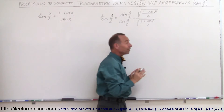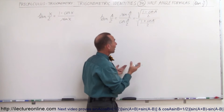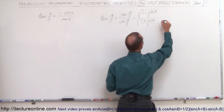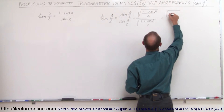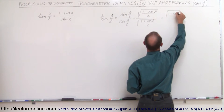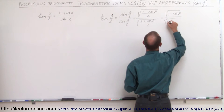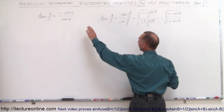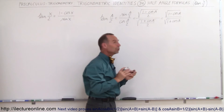Now we can see that both the numerator and the denominator are divided by the square root of 2, so that can be simplified to the square root of (1 minus cos(a)) divided by the square root of (1 plus cos(a)). Now that still doesn't look anything like the identity, so what can we do now?